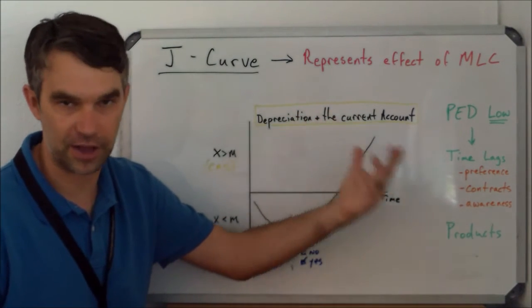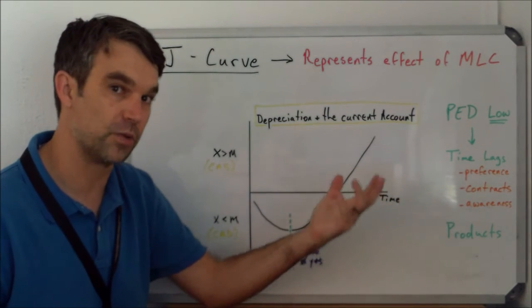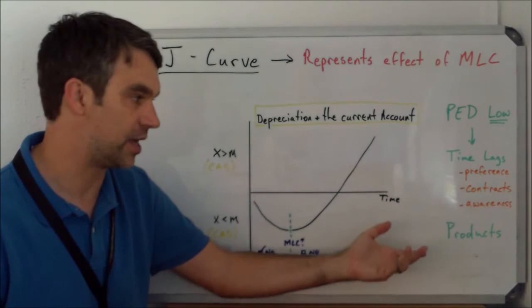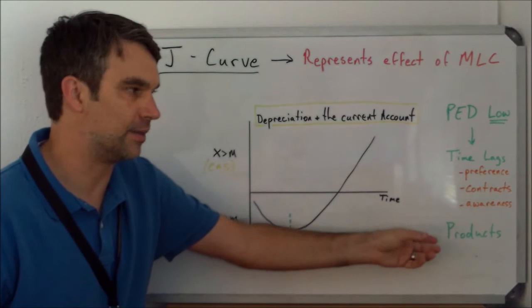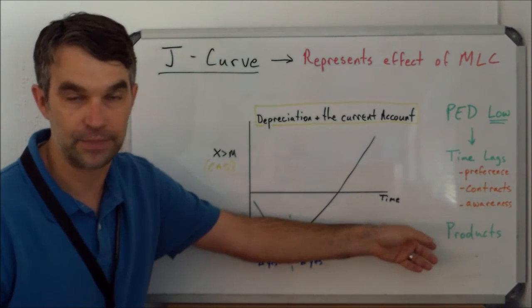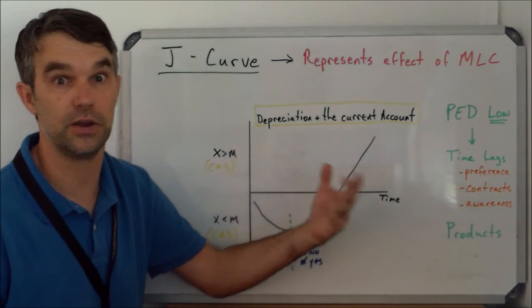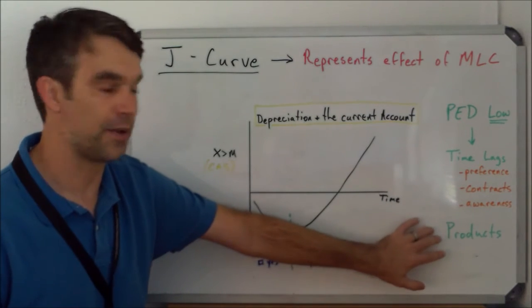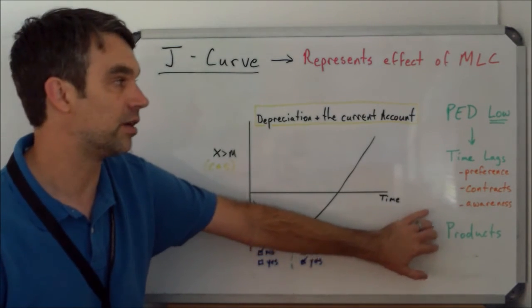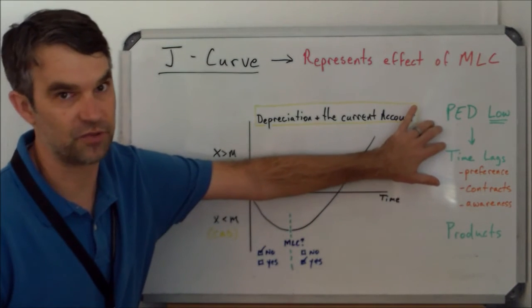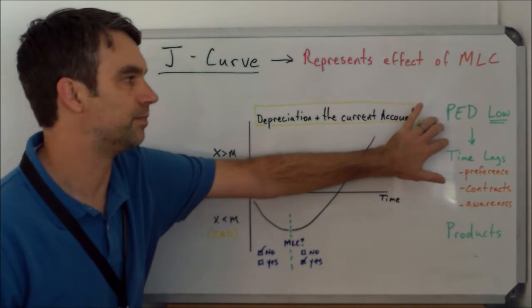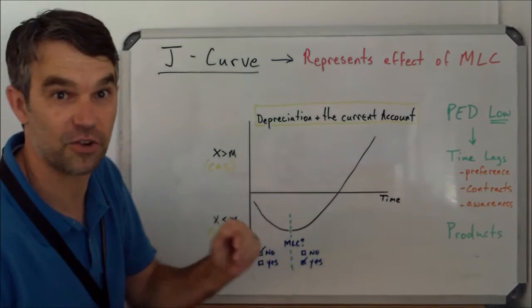The products that they make are part of the reason why they have a current account deficit and part of the reason why their exchange rate is depreciating—because they're probably producing primary commodities. As we've discussed before and will continue to discuss in Unit 4, primary commodities tend to have very low PEDs, also very low PESs, but that's another talk for another day.